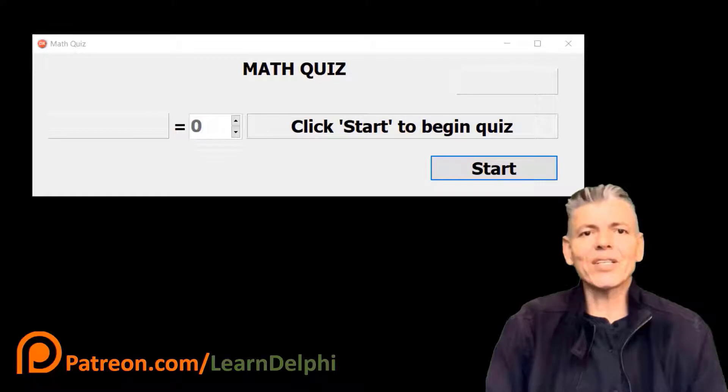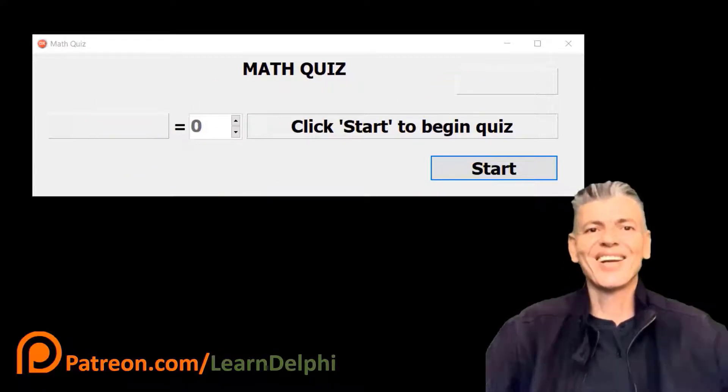We already set up the behaviors of the visual components of our math quiz application. So far, we learned how to increment and decrement a number. We use Delphi's inc procedure to increment a number. Now we must add code so our application gives the user 10 simple random math questions.